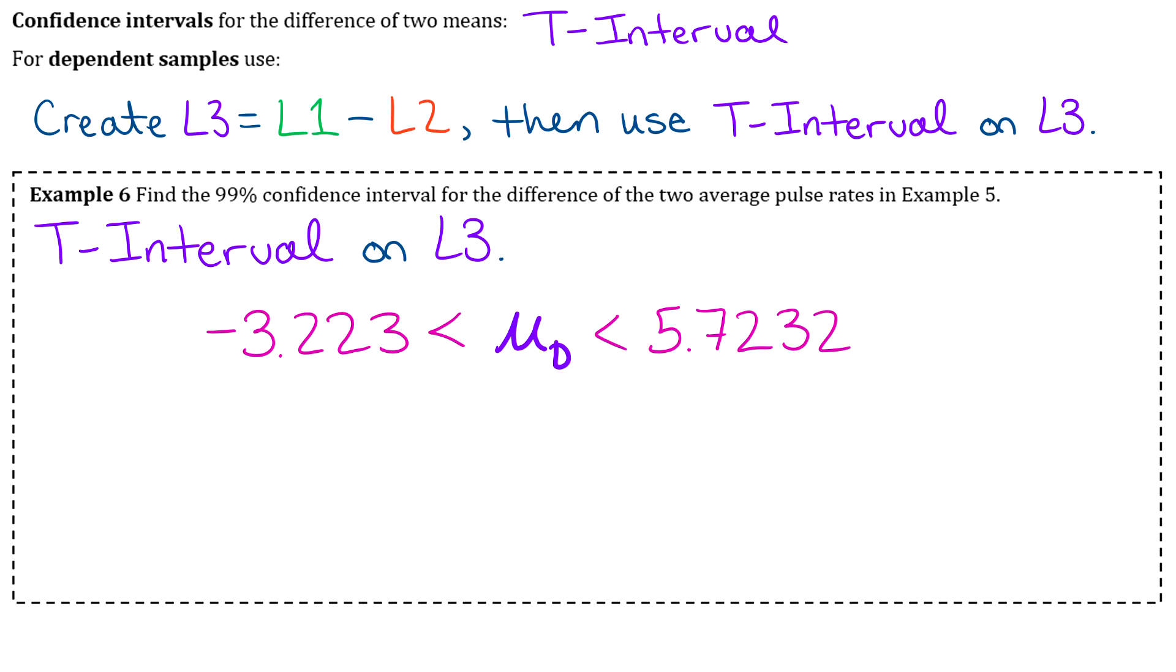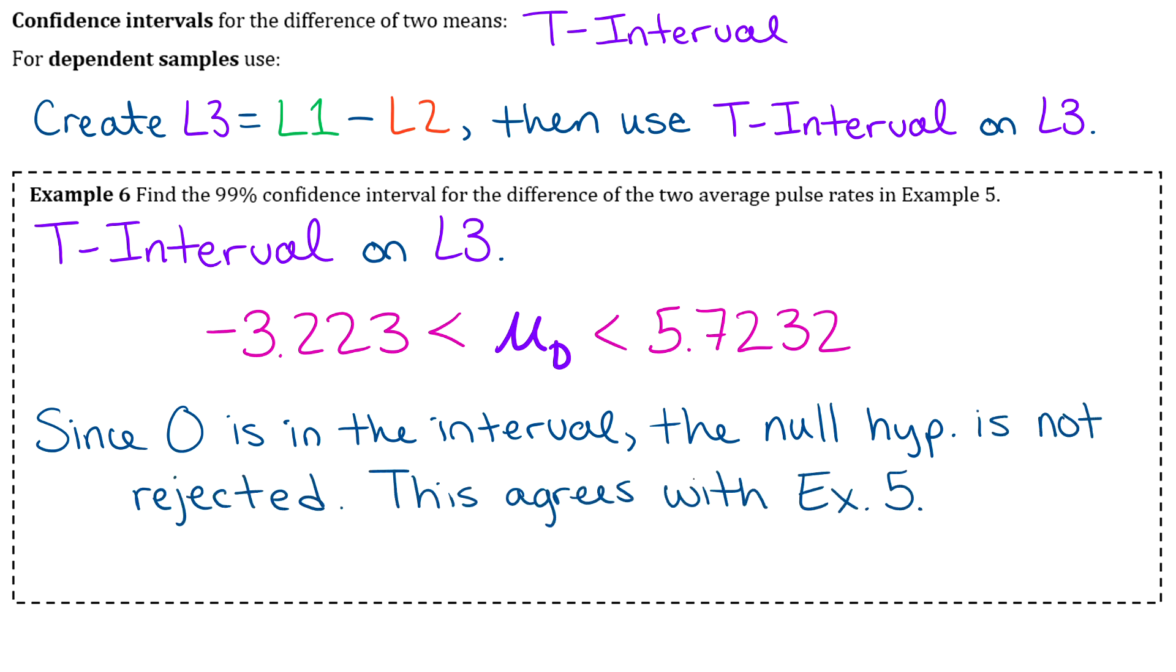And then we're using this confidence interval for the same reason that we were in the last section. So we want to make a decision about whether to reject the null or to not reject the null hypothesis. And we do it based off of whether zero is included in that interval. So if zero is in an interval, then the null hypothesis is not rejected. And if it is not in the interval, then the null hypothesis is rejected. So you can look back at your notes from the last section. The same rules from that one apply to this as well. So zero is definitely included in this interval. So we'll say since zero is in the interval, we do not reject the null. Or you can say the null hypothesis is not rejected. Same thing. But either way, that does agree with the result that we got in example five from the hypothesis test. So we'll say that that agrees.